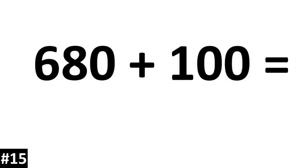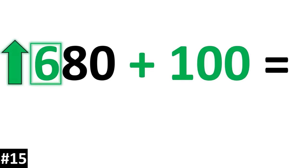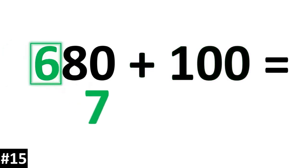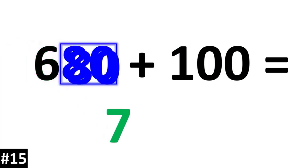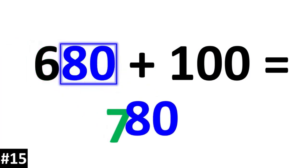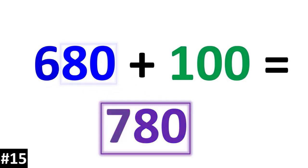680 plus 100. To add 100 to 680, the 6 hundreds goes up to 7 hundreds. The other numbers stay the same, and 680 plus 100 is 780.